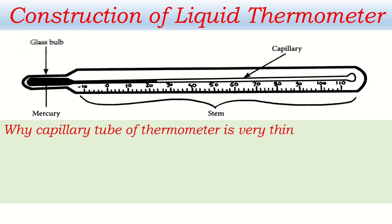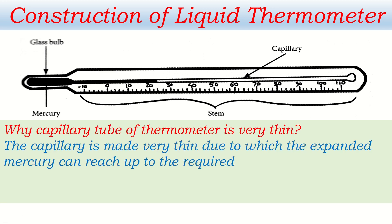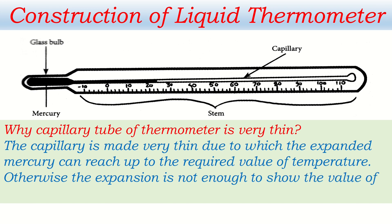Another important question: why is the capillary tube of the thermometer very thin? The capillary is made very thin so that the expanded mercury can rise up to the required value of temperature. Otherwise, the expansion would not be enough to show the temperature value. The mercury inside the glass bulb is a small amount, so if the capillary is made very thin, the expanded mercury can reach up to show high temperatures like 80, 90, or 100 degrees Celsius. If it were wide, measurement of temperature would not be possible.